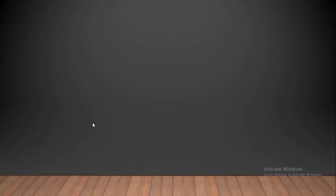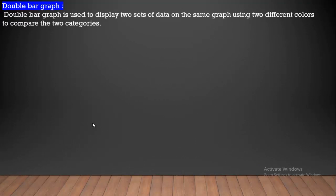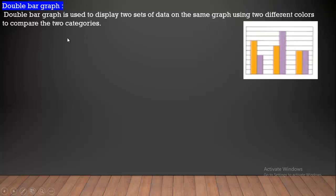And double bar graph. A double bar graph is used to display two sets of data on the same graph using two different colors to compare the two categories.